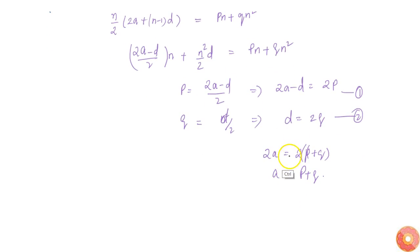So we found what p and q is, and we are asked only to find the common difference d. So common difference d is equal to 2q.